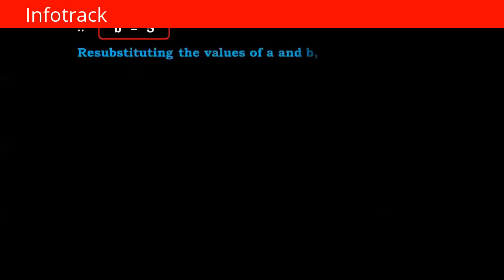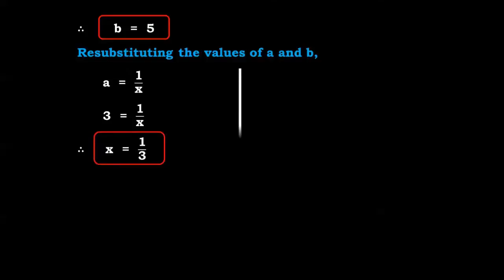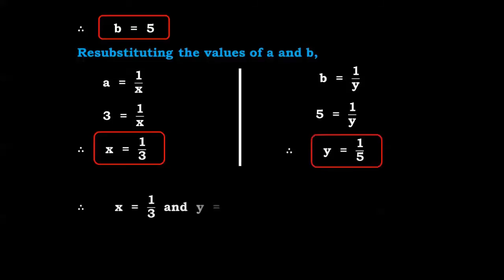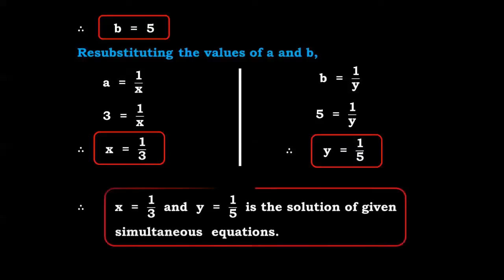Now we can resubstitute the values of a and b. Since 1 upon x equals a, we have 3 equals 1 upon x, therefore x equals 1 upon 3. And since b equals 1 upon y, we have 5 equals 1 upon y, therefore y equals 1 upon 5. So the answer x equals 1 upon 3 and y equals 1 upon 5 is the solution of the given simultaneous equation.